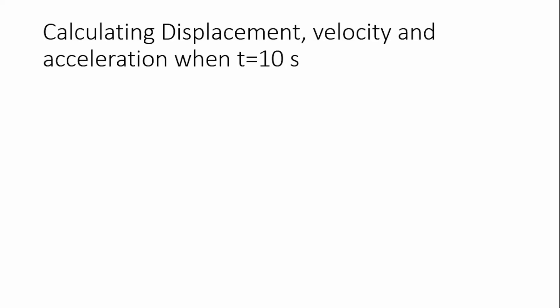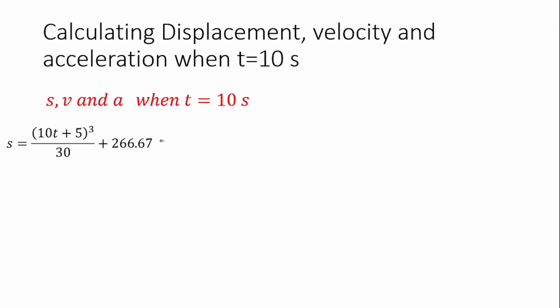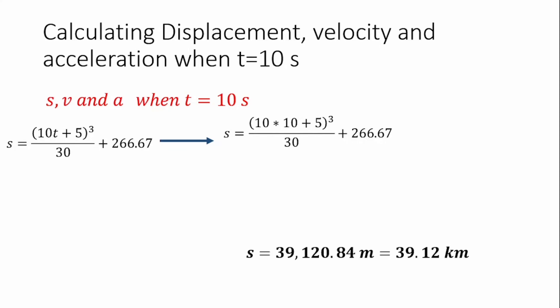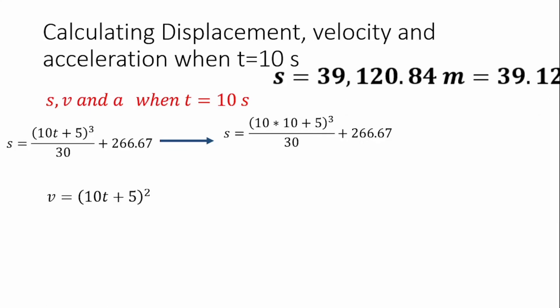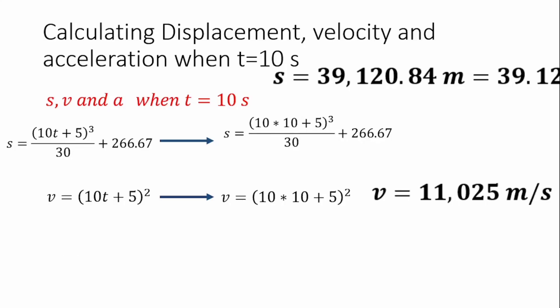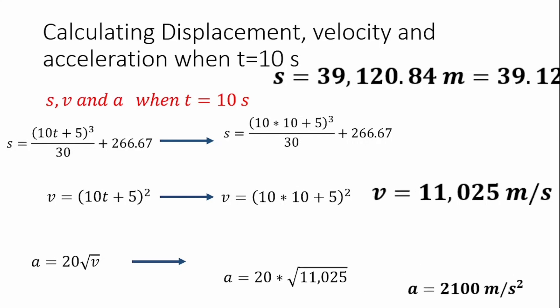Now we evaluate at t equals 10 seconds. Substituting t equals 10 into the displacement equation gives s equal to 39.12 kilometers. Substituting t equals 10 into the velocity equation gives v equal to 11,025 meters per second. Finally, substituting v equals 11,025 into the acceleration relation a equals 20 root v gives acceleration equal to 2100 meters per second squared.